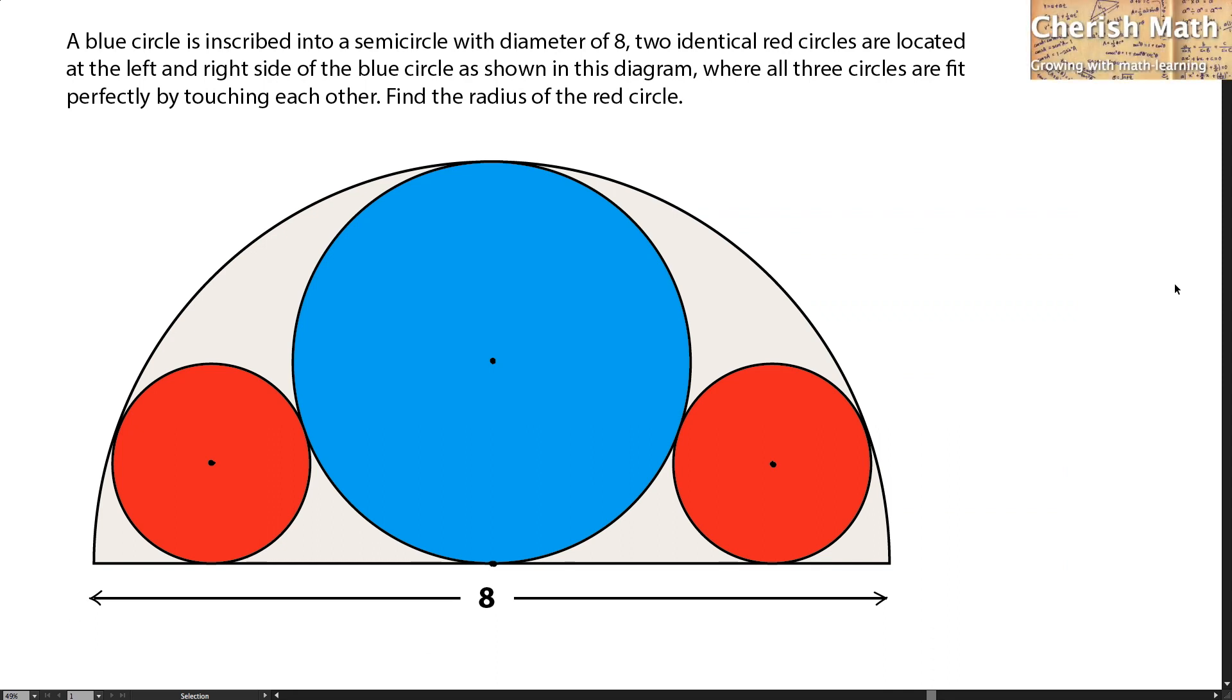Say hi from Cherish Math, and this is the problem. A blue circle is inscribed into a semicircle with diameter of 8. Two identical red circles are located at the left and right side of the blue circle as shown in this diagram, where all three circles fit perfectly by touching each other. Find the radius of the red circle.